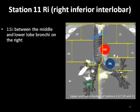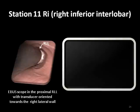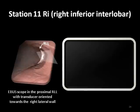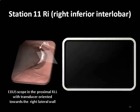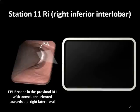Station 11R, inferior, is between the middle lobe and right lower lobe bronchi. To visualize Station 11R inferior, the EBUS scope is positioned in the proximal right lower lobe bronchus. In general, the transducer can be oriented towards the right lateral wall. Here, the lymph node and lung parenchyma are visualized. Again, interlobar vessels can be seen depending on the exact position of the node and scanning orientation.